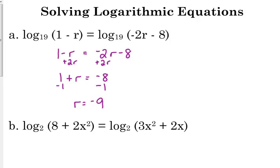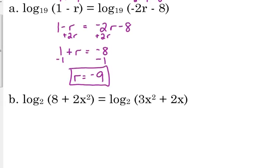So, you definitely want to check these, whether you check it in your calculator or if you just confirm that 1 minus a negative 9 is really like adding 9, so that's log base 19 of 10, and negative 2 times negative 9 minus 8 is 18 minus 8, which is 10, so we get the same thing on both sides. So it is okay, negative 9 is our solution, but I highly suggest that you always, always, always check these solutions, these equations.